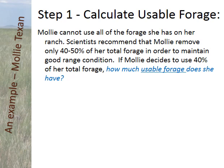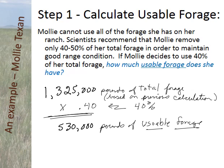Scientists would recommend that in the southern mixed plains, Molly could use 40 to 50% of her forage and the land would still be maintained in good condition. Molly has decided to be a bit conservative and use 40% of the total forage as usable forage. There was 1,325,000 pounds of total forage. Multiplying by 0.4 gives you 530,000 pounds of usable forage. That's the amount of dry forage that Molly can use to set her stocking rate.